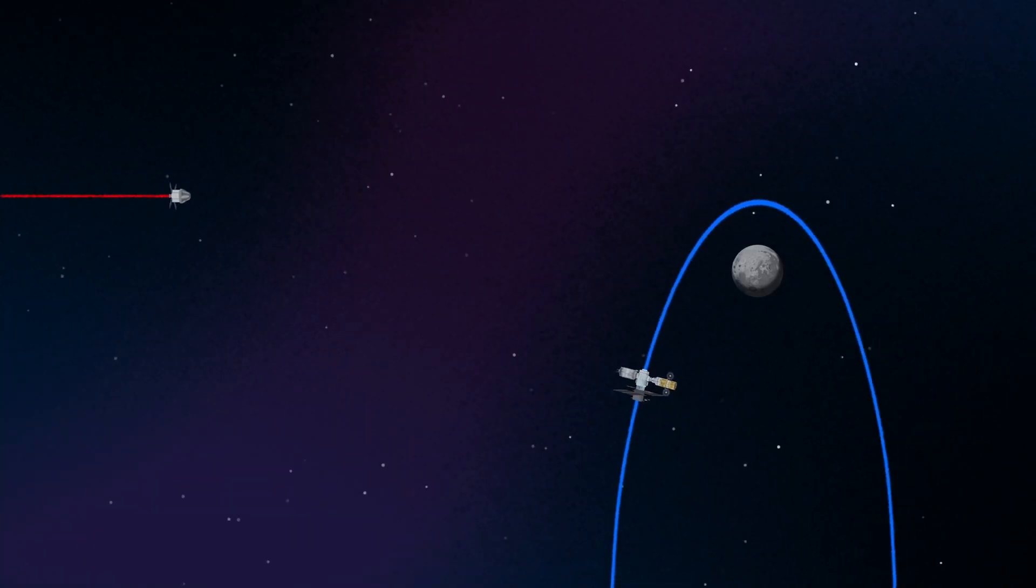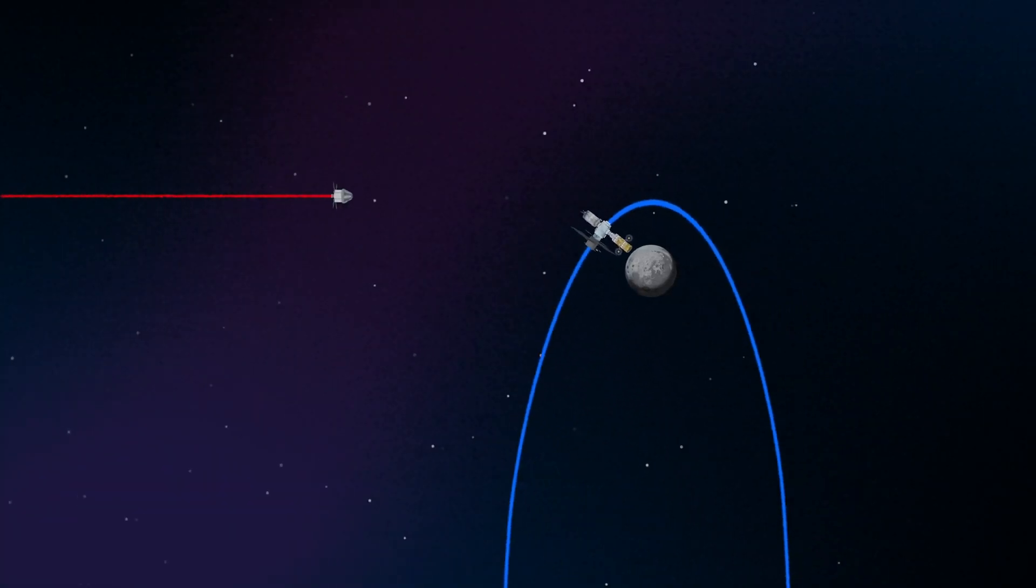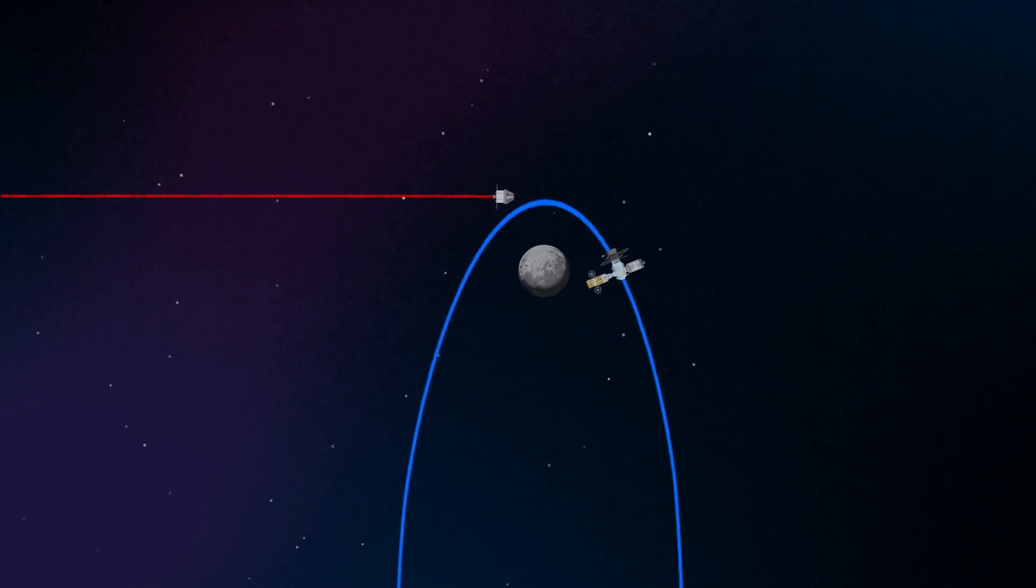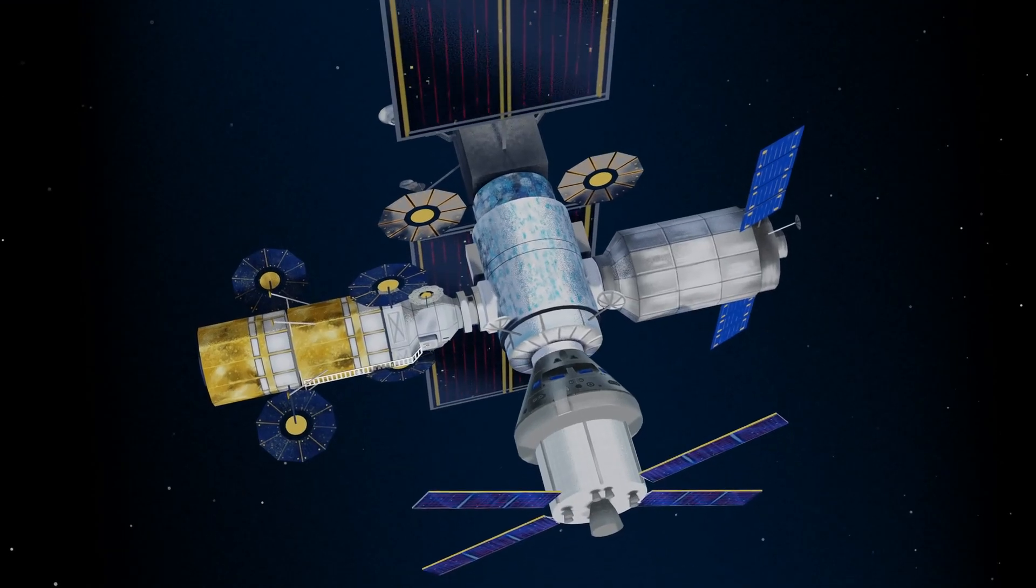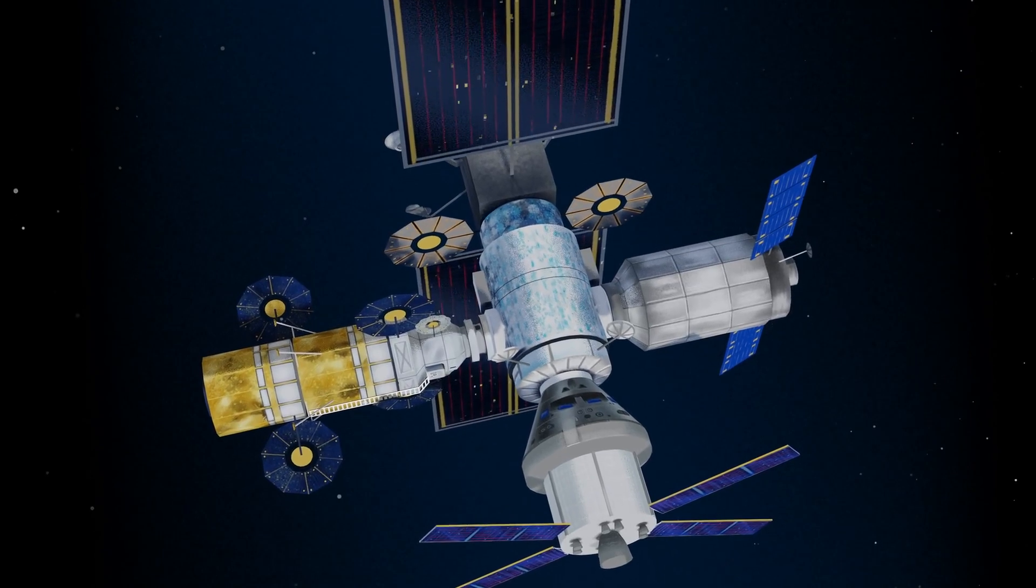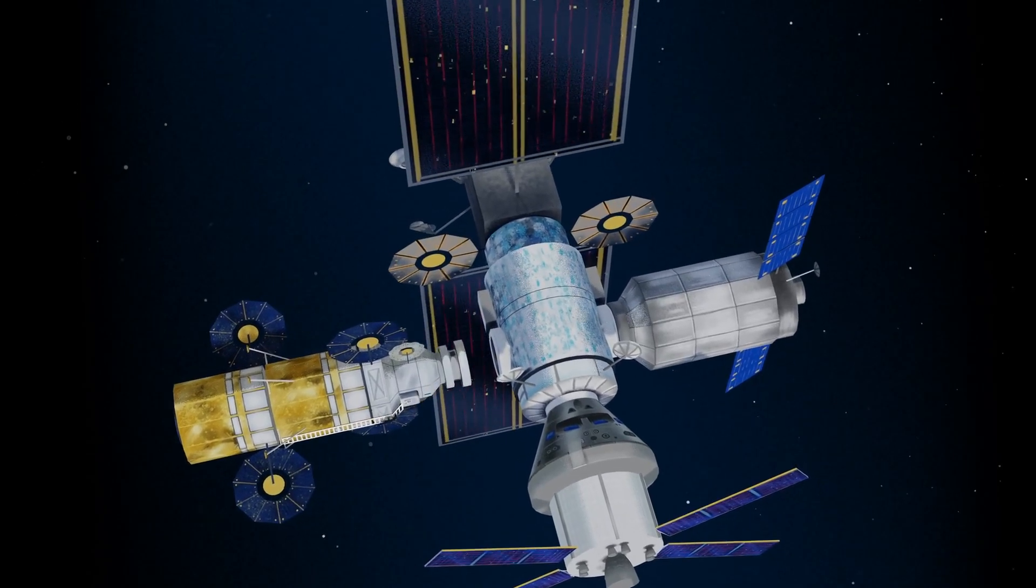Returning to our crew as they approach Gateway, the Orion must match the elliptical orbit of the station in order to successfully dock. Once on board, pre-selected crew members transfer to the lunar lander, while those assigned to Gateway remain on station.